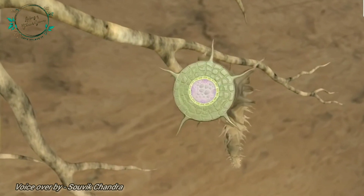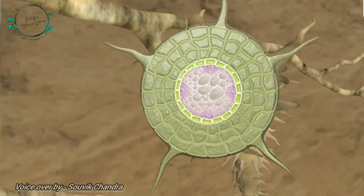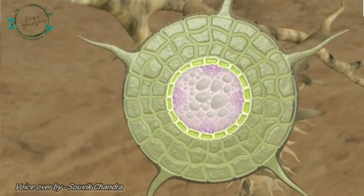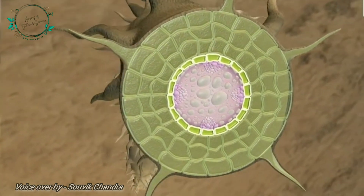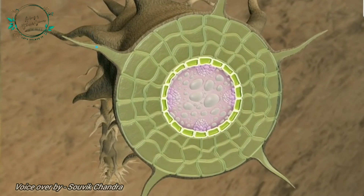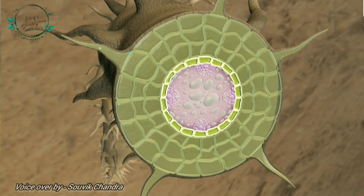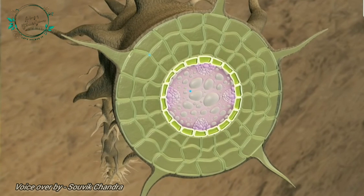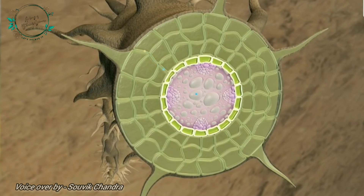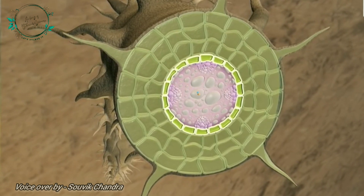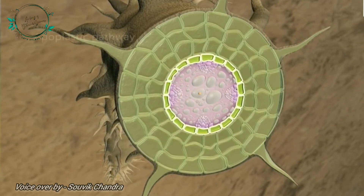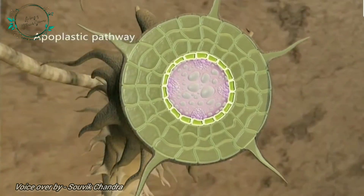Water and minerals enter the root by three pathways: apoplastic, symplastic, and transmembrane pathway. If water and minerals move from cell to cell through spaces between the cell wall, then it is known as the apoplastic pathway.